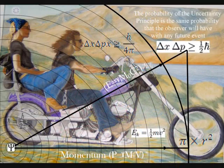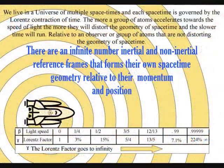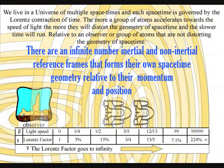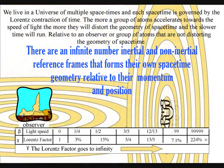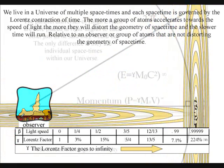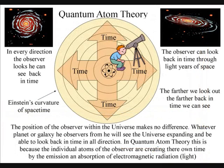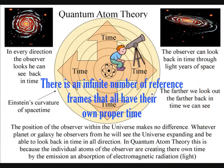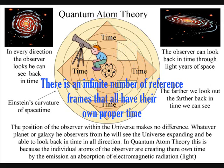In this theory there is no universal time, because the universe is made up of an infinite number of reference frames that have their own proper time relative to their momentum and position. Therefore we are all in a unique position at the center of our own reference frame and can look back in time in all directions at the beauty of the stars.